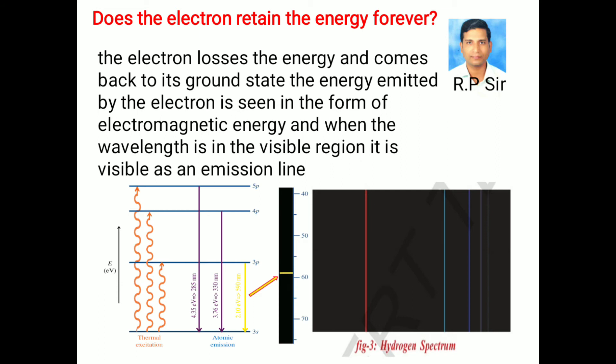Does the electron retain the energy forever? The answer for this question is no. The electron loses the energy and comes back to its ground state. The energy emitted by the electron is seen in the form of electromagnetic energy. And when the wavelength is in the visible region, it is visible as an emission line. You can see these emission lines in the spectrum.